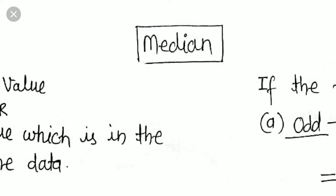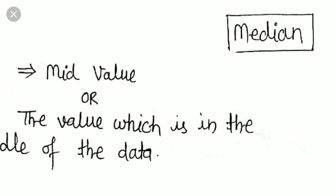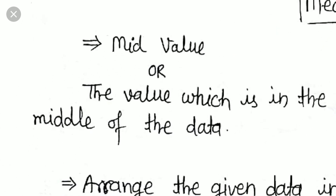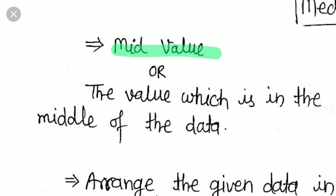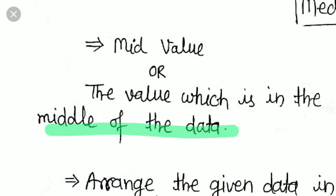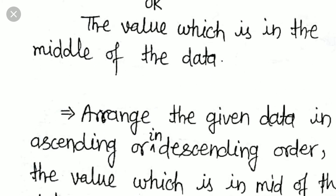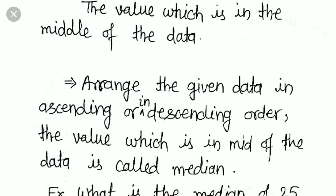Let us start this lecture on median. Median means mid value — the value which is in the middle of the data. We have some data, and the value which is in the middle is known as the median. To find the mid value, we have to arrange the data in ascending or descending order.